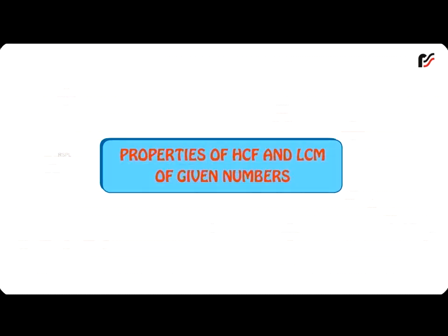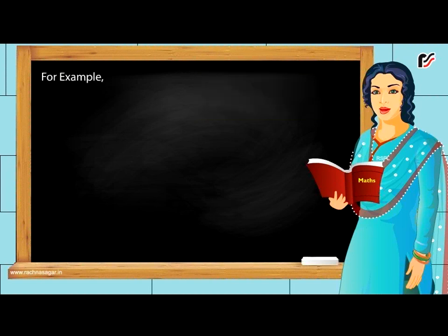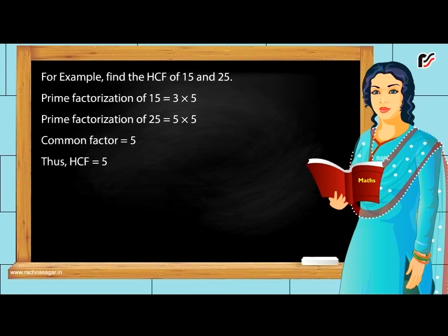Properties of HCF and LCM. The HCF of given numbers is not greater than any of the given numbers. For example, find the HCF of 15 and 25. Prime factorization of 15 = 3 × 5. Prime factorization of 25 = 5 × 5. Common factor = 5. Thus, HCF = 5. Here, 5 is smaller than both 15 and 25.